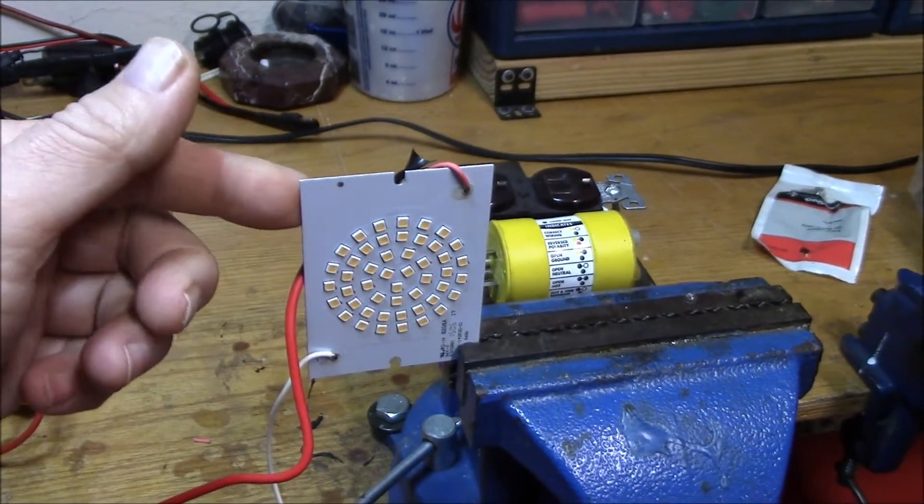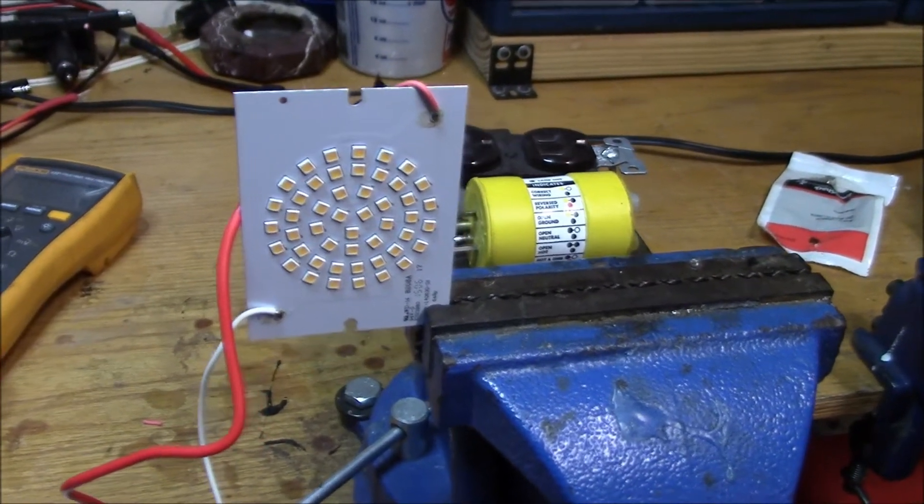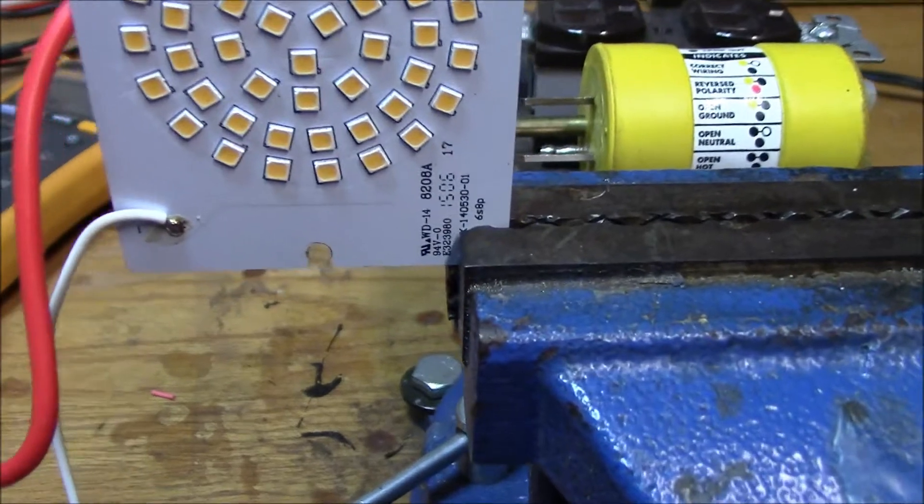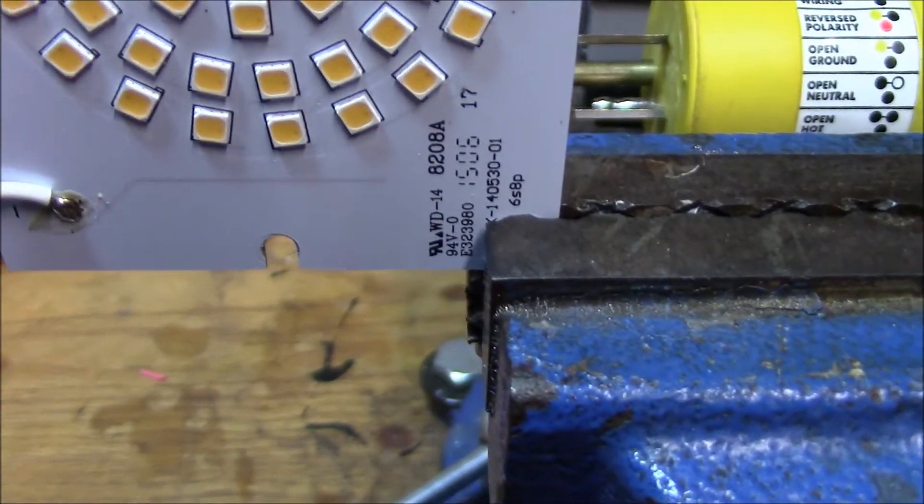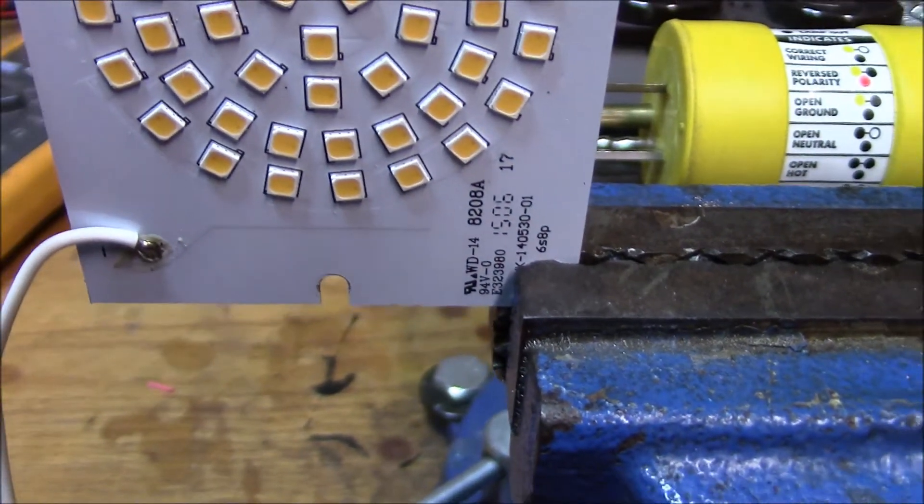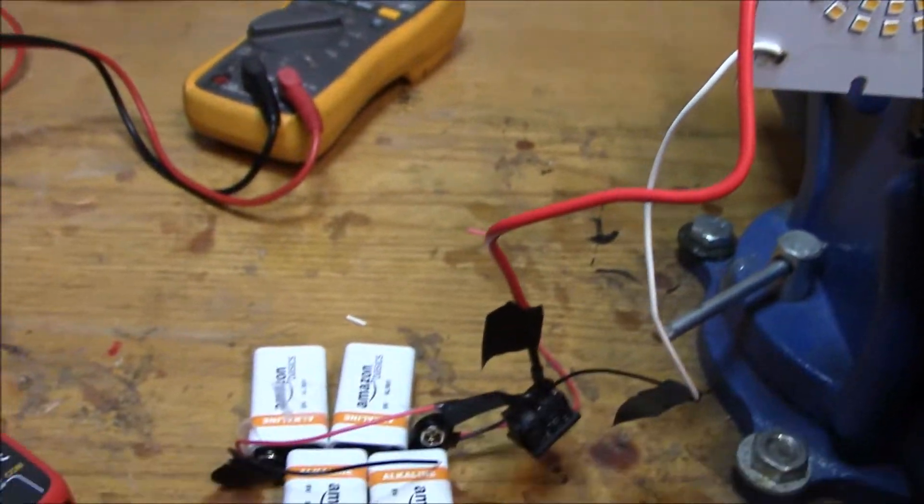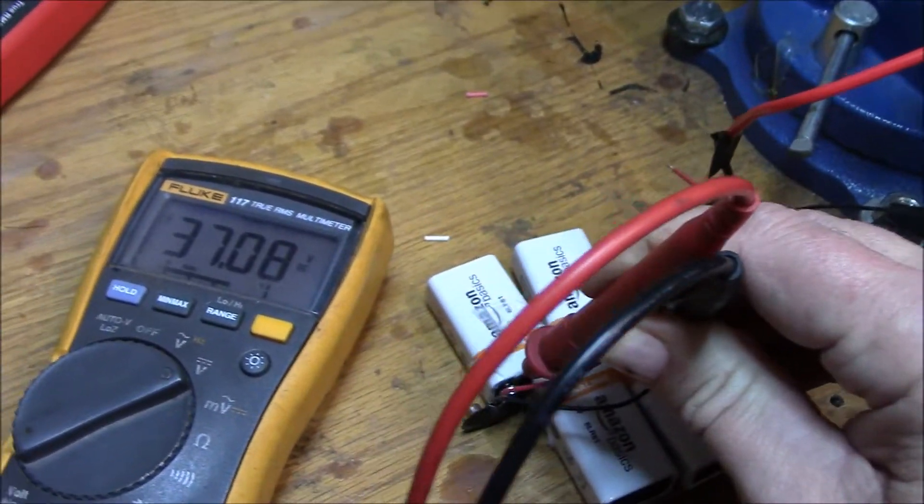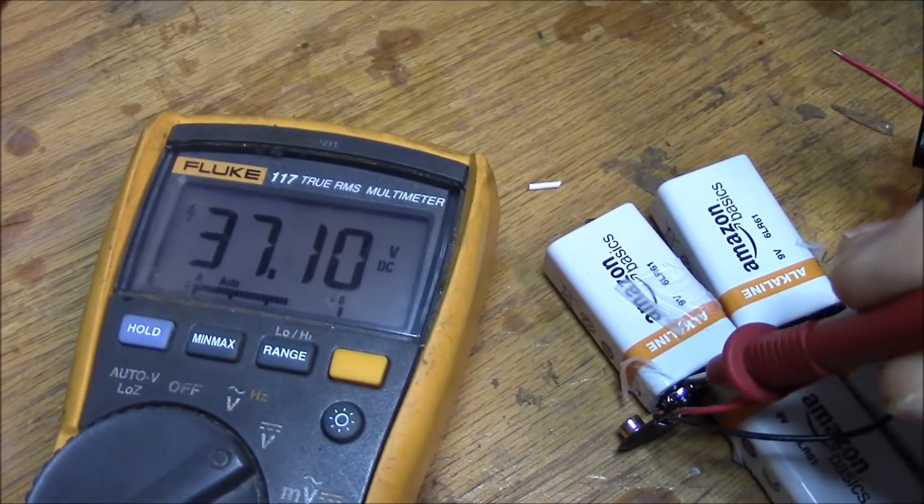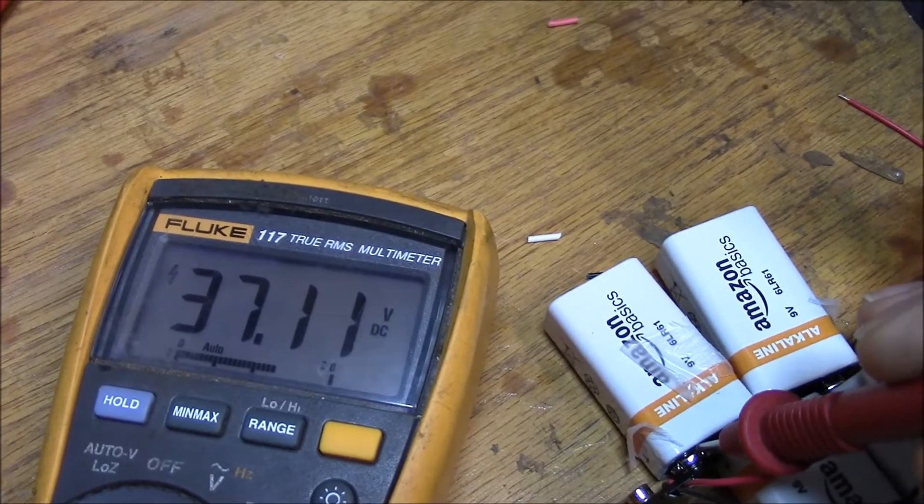And it looks like it's a 36 volt deal and I said well how the heck am I going to get 36 volts. So I had some of these Amazon batteries and hooked them up in series and I got enough volts there.